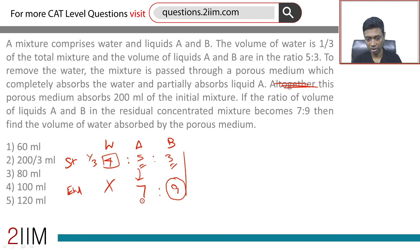What I'm going to do is make these two numbers equal and then work up from there. Water to A to B—if this were 9 initially, then this should have been 15.